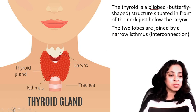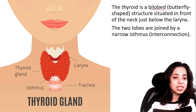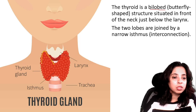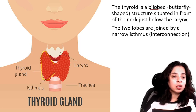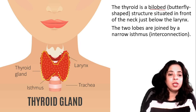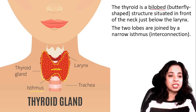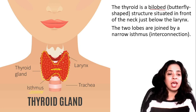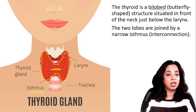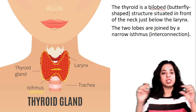You can see this is one lobe and this is another lobe, and they are joined by a narrow part known as the isthmus. So below the larynx, the thyroid gland is present — it is butterfly-shaped, and the two lobes are joined by a narrow isthmus. Isthmus means an interconnection.